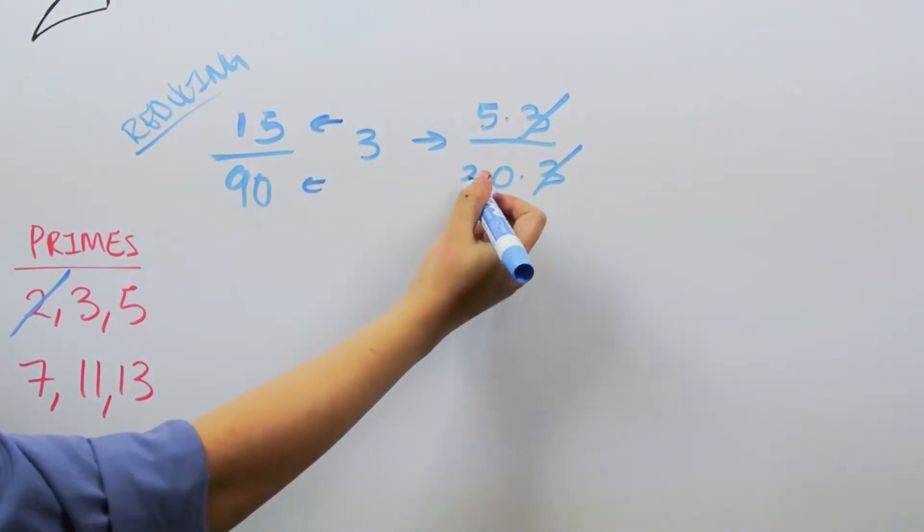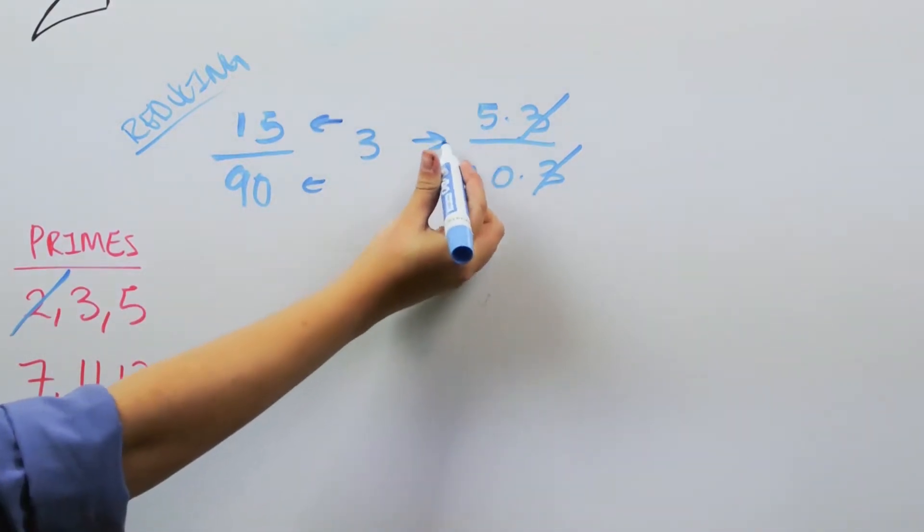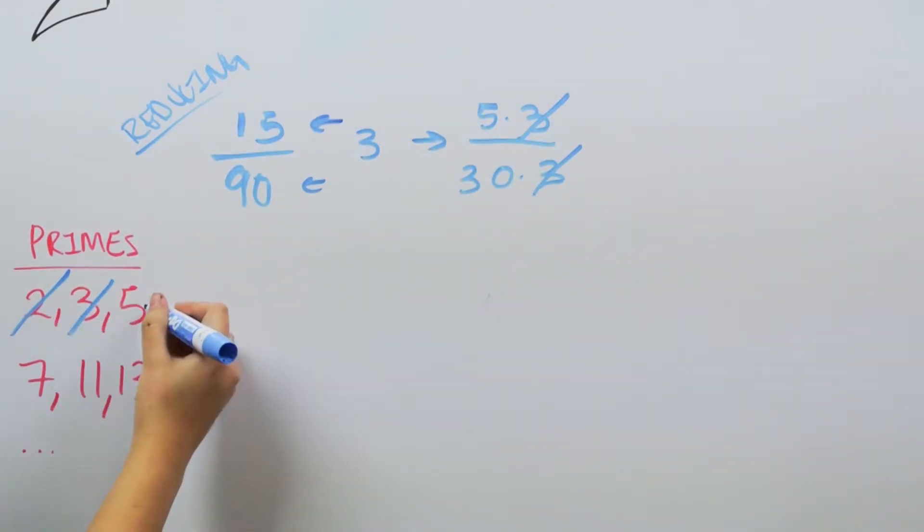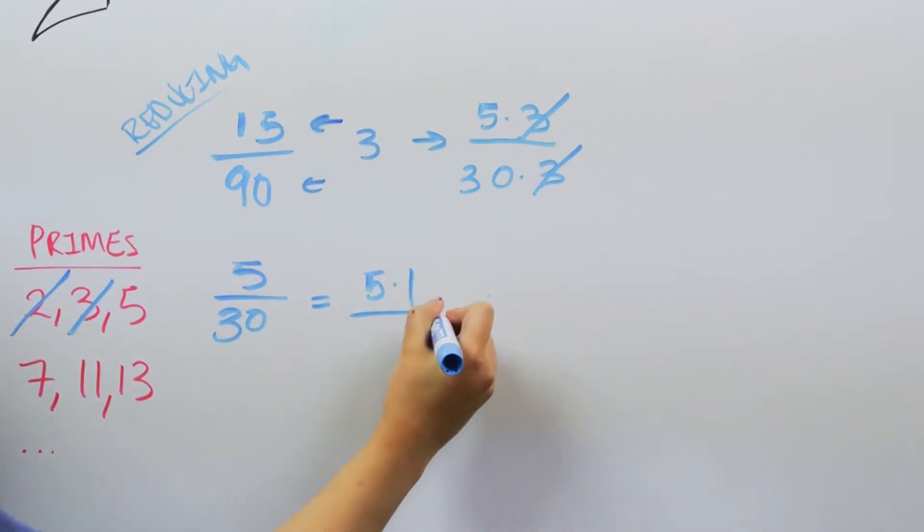Now, the denominator 30 can be divided by 3, but the numerator cannot, so we move on to the next prime, which is 5. Now, both 5 and 30 are divided by 5. So we can pull that out, cancel, and that leaves us with 1/6.